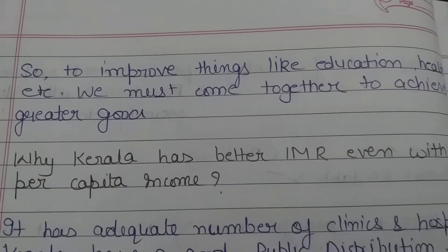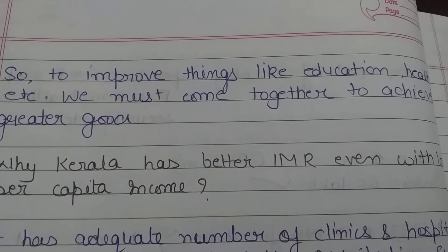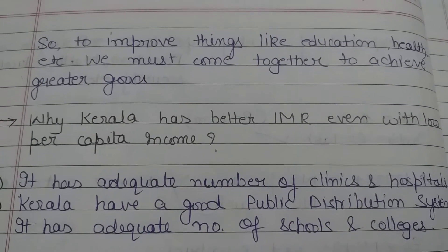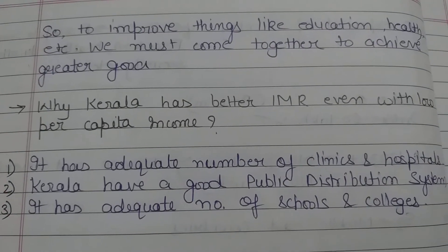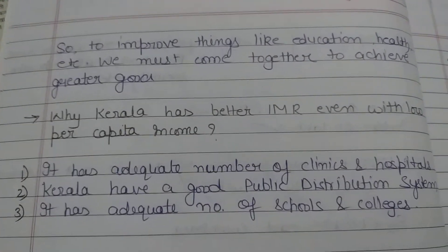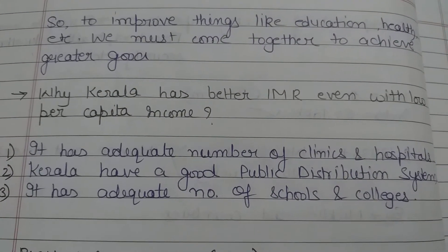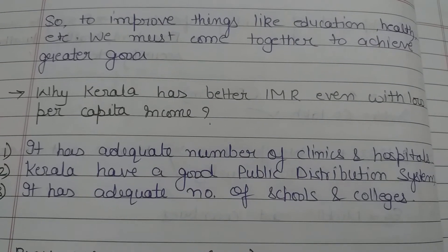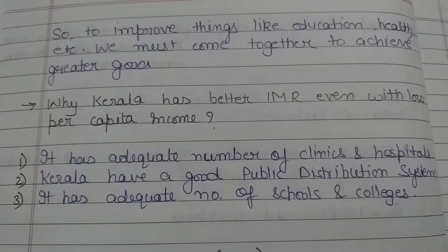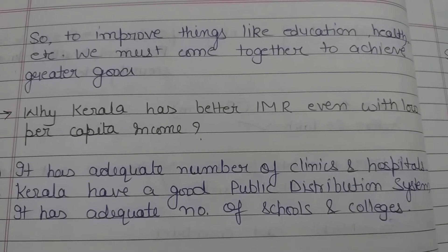Why does Kerala have better IMR even with lower per capita income? Because there are a proper number of clinics and hospitals there, so people get proper treatment. Kerala has a good public distribution system — food of good quality is distributed properly. PDS means public distribution system: food is equally distributed in Kerala, and good food distribution leads to better health. There are also a proper number of colleges and schools, so all children can go to school and college. That is why Kerala has a better IMR.